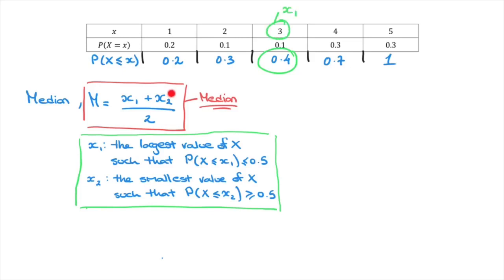To find X2, we still look at the cumulative probability row and look for the first probability which is greater than or equal to 0.5. Looking at the row, it doesn't take us long to see that corresponds to 0.7. Indeed, 0.7 is the first one which is greater than or equal to 0.5, and it corresponds to an X value of 4, so X2 equals 4.